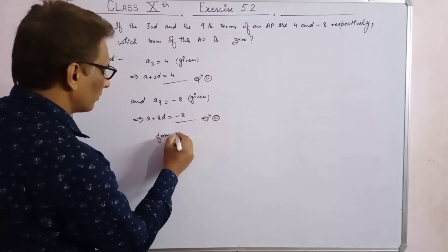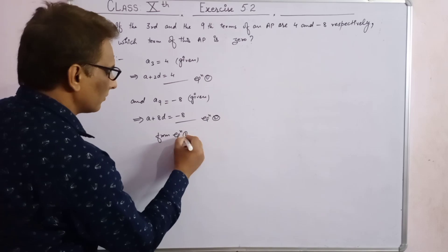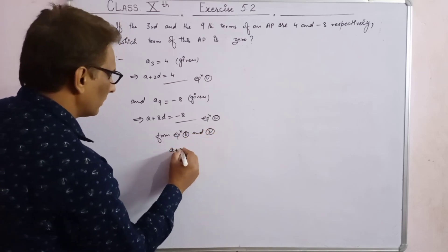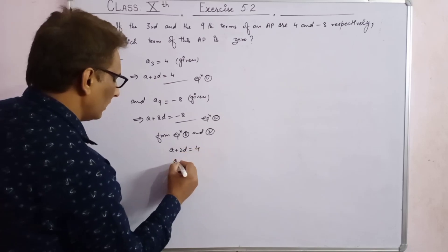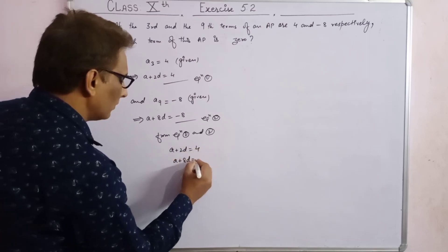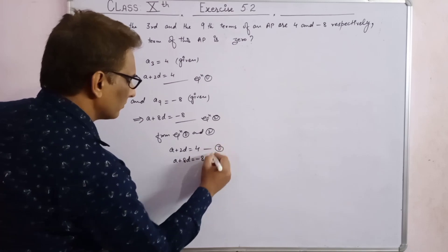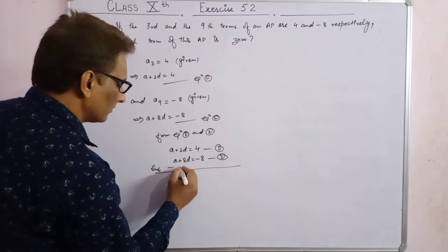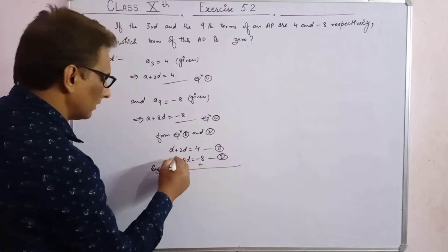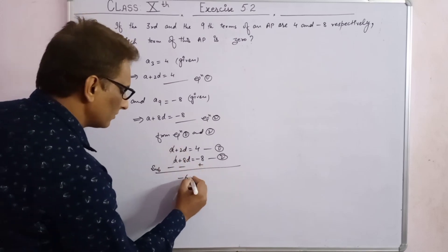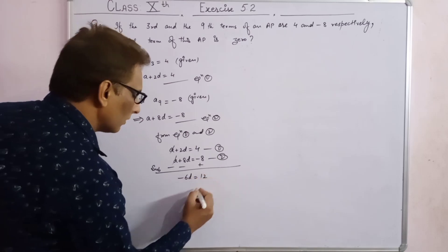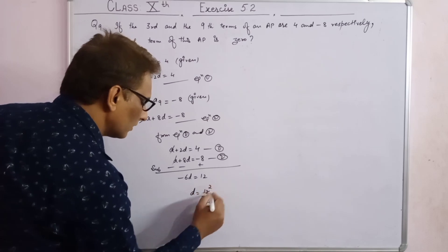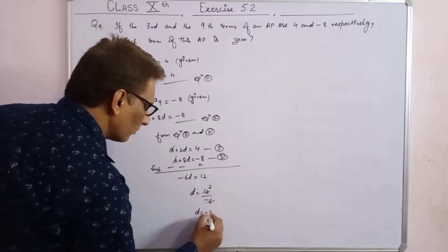From equations 1 and 2: subtracting equation 1 from equation 2, we get 6d equals minus 12. Therefore d equals minus 12 upon 6, which gives d equals minus 2.